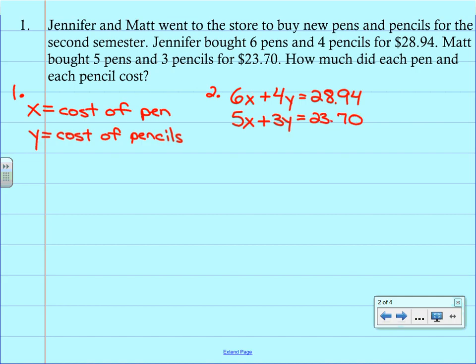Now, this would be a mess to solve by substitution because we don't have any variables that have a coefficient of one. But they are nicely lined up. They're both in standard form. So we can go ahead and solve by elimination. So let's drop out the Y's. In order to do that, let's multiply the top equation by negative 3 and the bottom equation by positive 4.